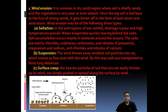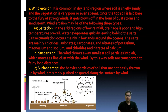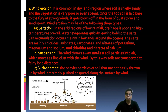Wind erosion can be divided into three types: saltation, suspension, and surface creep. In arid regions where drainage is poor and high temperatures prevail, water evaporates quickly and leaves behind salts. Salt accumulation occurs mainly in lowlands. These salts are mainly chlorides, sulfates, carbonates, and nitrates of potassium, magnesium, sodium, and calcium. In dry areas these salts are deposited on the soil and hamper plant growth.